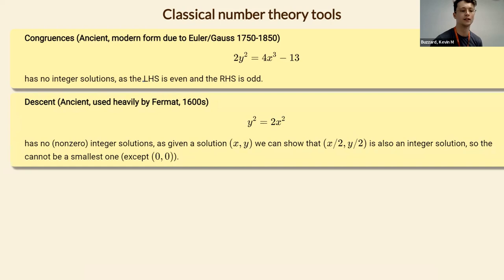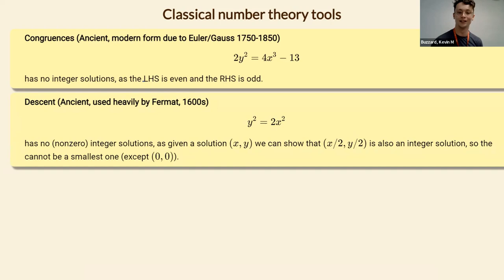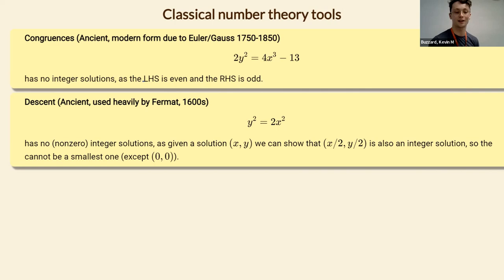The second classical technique is descent, which goes back to the Greeks and was used a lot by Fermat. You may know this from showing the square root of two is irrational: you try to solve y squared equals two x squared, and if there was a solution then y would be even, which would make x even, so you could construct a smaller solution — an infinite descent giving a contradiction.